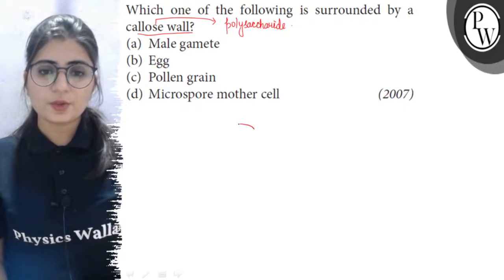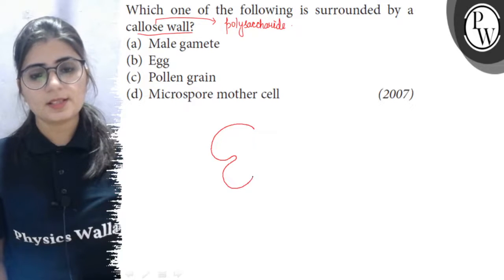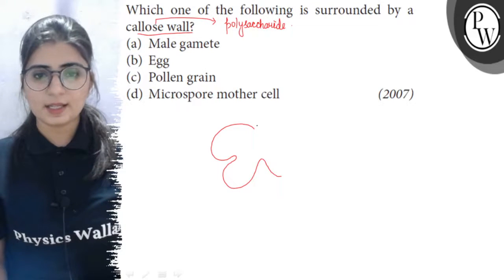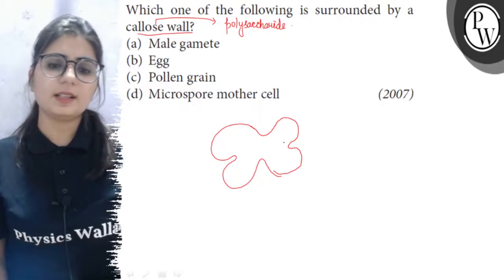So, when we draw the T.S. of an anther, we will see two lobes which are connected together. So, this is the T.S. of an anther.